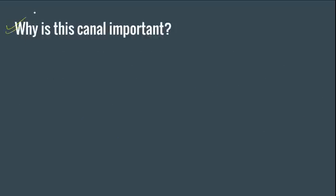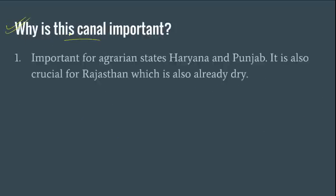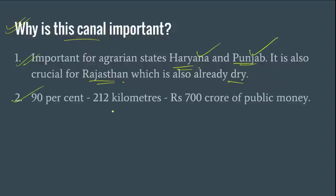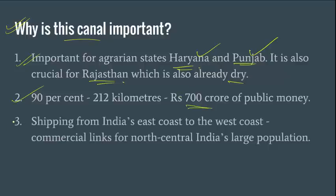So this is the controversy and the current status. This canal is important because we are talking about two agrarian states — Haryana and Punjab — for whom this water is very important. Rajasthan is also a minor beneficiary and is already a water-scarce state, so it will definitely benefit. 90% of the work on the Haryana side is already complete with a public expenditure of 700 crores, so it seems logical to finish the project and reap the benefits. The shipping industry will also benefit.